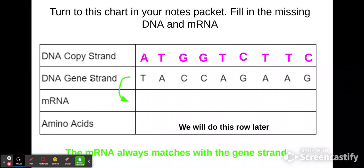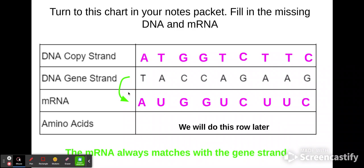Because the gene strand is here, we match T with a letter for RNA. Remember, RNA can't have T — it has to have U. So T matches with A, and A matches with U. The messenger RNA going across should be G, G, U, C, U, U, C. Now go to the next example: A, U, G, G, U, C, U, U, C.